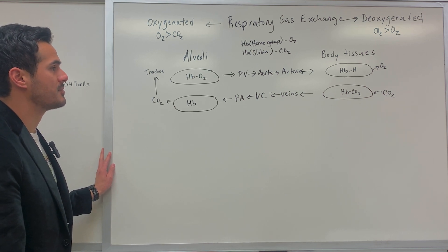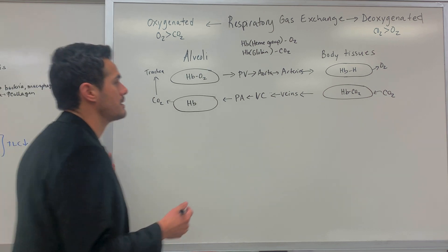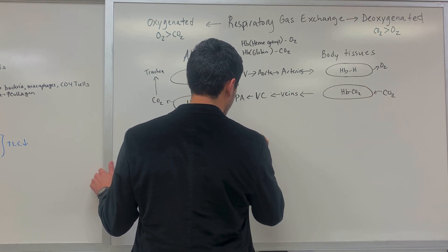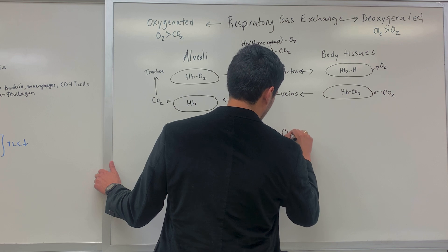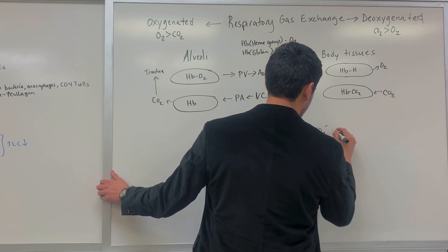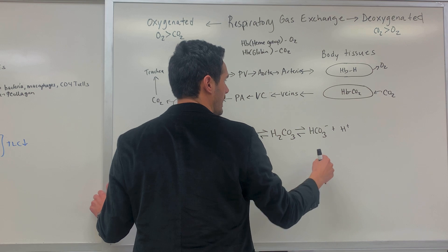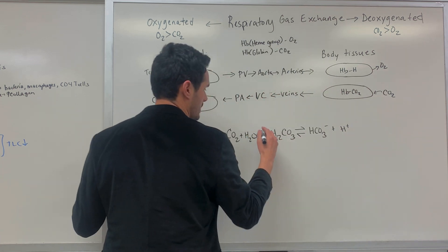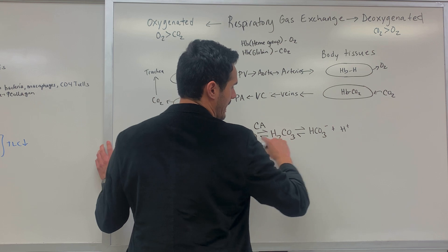Now that we've covered the first mechanism for CO2 transport, the next mechanism involves an equation you'll get intimately familiar with: carbon dioxide plus water is in equilibrium with carbonic acid. Carbonic acid can then dissociate into bicarbonate ion and a free proton. The enzyme carbonic anhydrase is what converts CO2 into carbonic acid and then into bicarbonate.